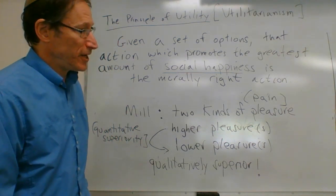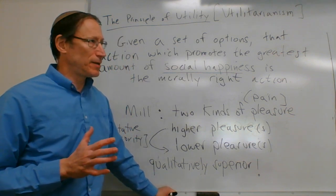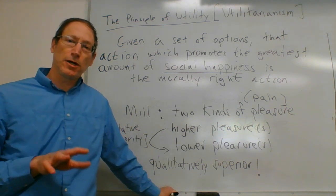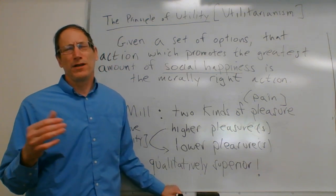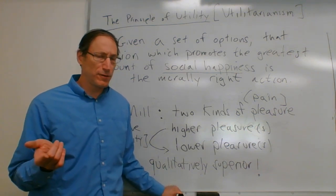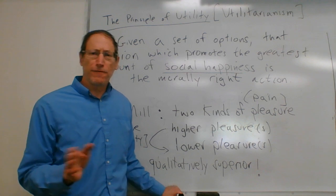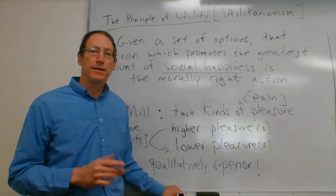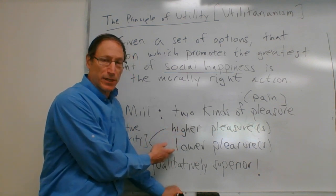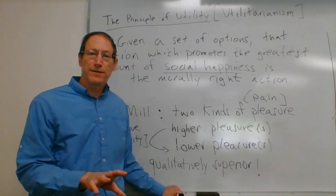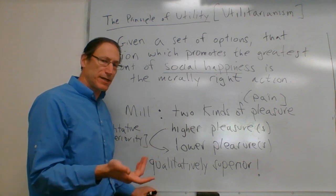Alternatively, Mill could have said: the fact is there are two kinds of pleasure — mental and physical — and maybe we don't always prefer mental over physical pleasures. Some people sometimes prefer the physical. But having two kinds of pleasure may already be enough to get him out of the objection that this is an animalistic theory.